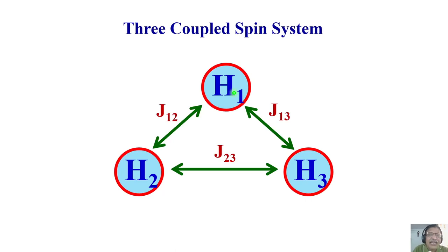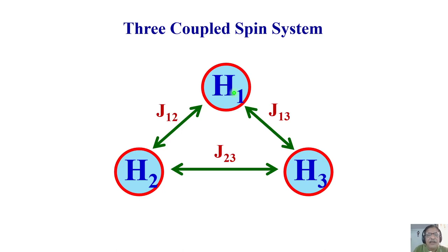Now I will go to three coupled spin systems. For three spins, there are n chemical shifts, n(n−1)/2 couplings — so three chemical shifts and three couplings — and 2ⁿCₙ₋₁ maximum transitions, giving up to 15 transitions. There are 10 possible spin systems for three spins, and if I go to four spins there are 33 possible combinations. To analyze each thoroughly would require a full semester course, so I will show just a few representative examples.